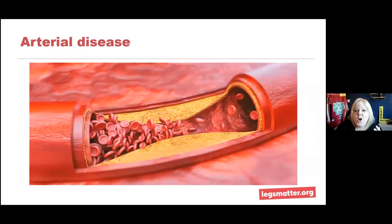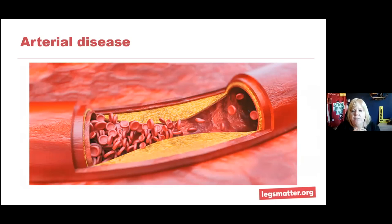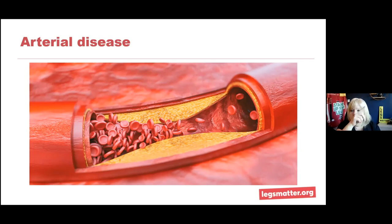So what can go wrong with the arteries? Arterial disease is a name we use, and it can describe the furring up of the arteries — deposits within the arteries, narrowing of the artery, or even a complete blockage. You may have heard of words such as atherosclerosis, which is hardening of the artery wall, or atheroma, which is deposits within the artery — in other words, muck blocking up the artery.